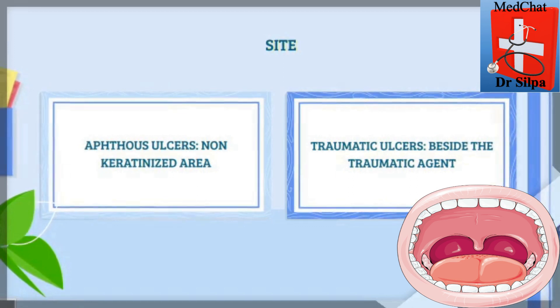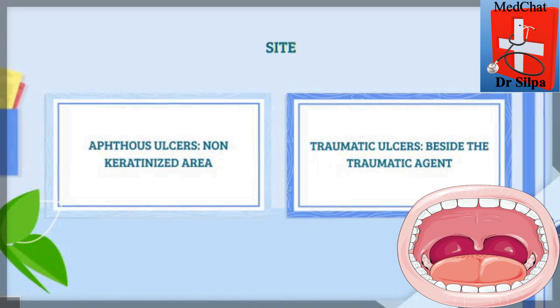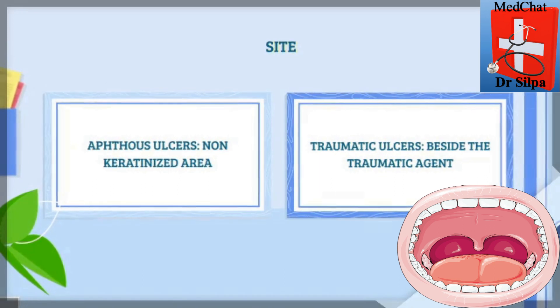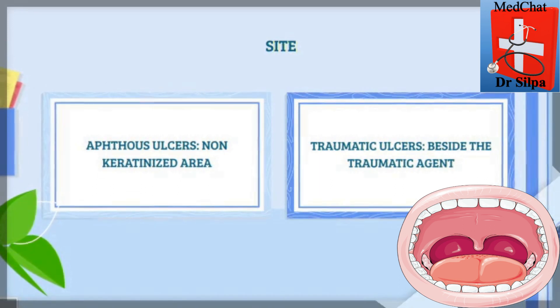Traumatic ulcers occur beside the traumatic agent, or the history can reveal a traumatic etiology to that particular area.